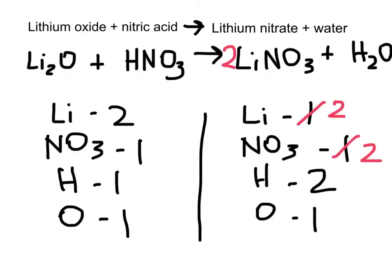Lithium is now balanced. For nitrates, we've got two on the right side and only one on the left, so put a 2 in front of HNO3. That also doubles our hydrogen count on the left to two. Let's go back and double-check: two lithiums to two, two nitrates to two, two hydrogens to two hydrogens, one oxygen to one oxygen — so it actually balances. That is our final equation.